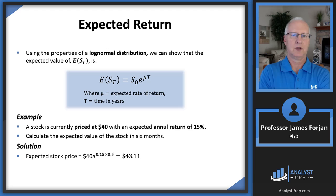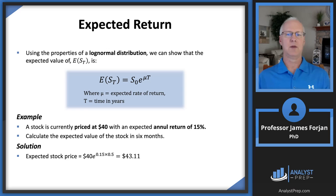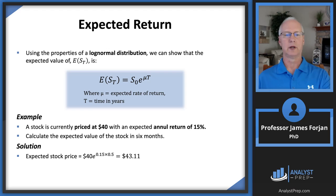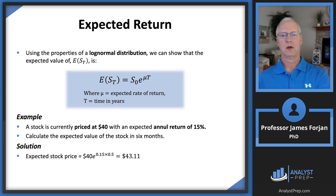The learning objective asks us to explain expected return — it's pretty simple. The expected stock price at some time in the future is a function of the current stock price compounded; we use the e^x button on the calculator. For example, if a stock is priced at $40 with a return of 15% over six months, we raise that to 0.15 times 0.5. If we buy at $40 today, we can reasonably expect to sell at $43.11 in six months.